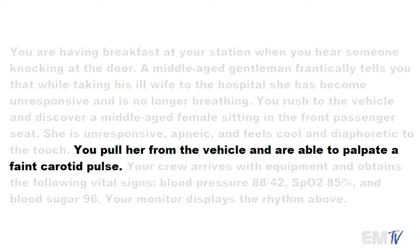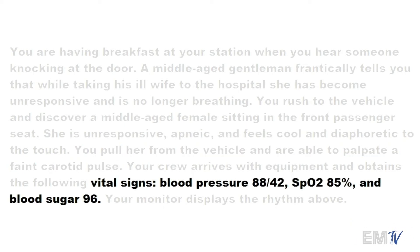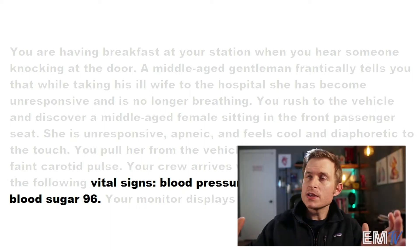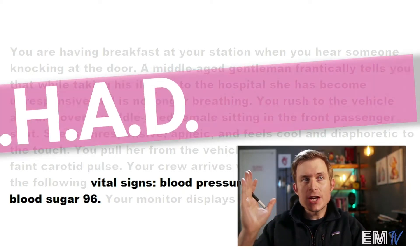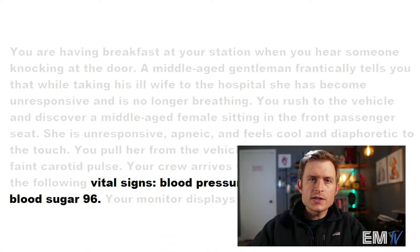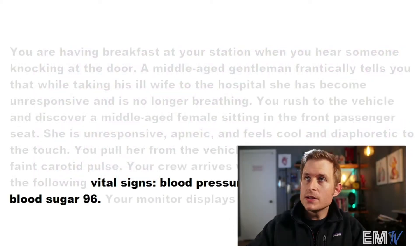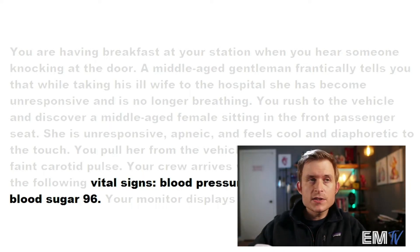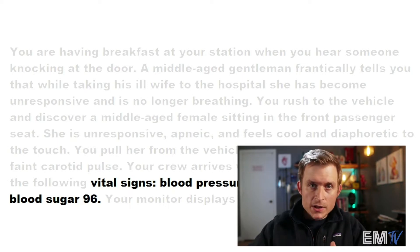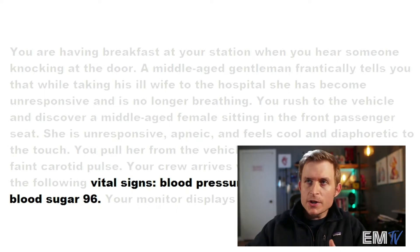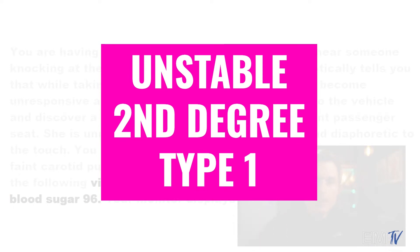You pull her from the vehicle, but you're able to palpate a faint carotid pulse. Once you get your equipment, you obtain some vital signs: blood pressure is 88 over 42, SPO2 is 85, and blood sugar is 96. So is this patient stable or unstable? For instability, I use the acronym CHAD — cardiac insufficiency, hypotension, alteration of mental status, and dyspnea. Based on the CHAD criteria, as well as the patient's presenting signs, symptoms, and vital signs: they are hypotensive, they are altered, they are apneic — they pretty much meet them all. So this patient I would determine is unstable. My final rhythm diagnosis would be an unstable second-degree type 1 heart block.